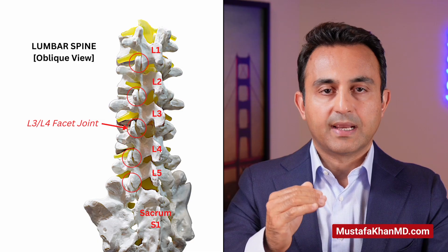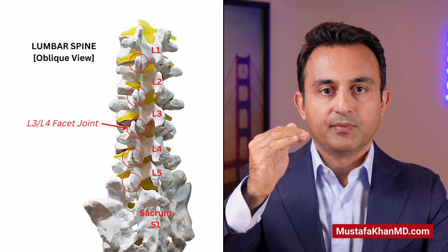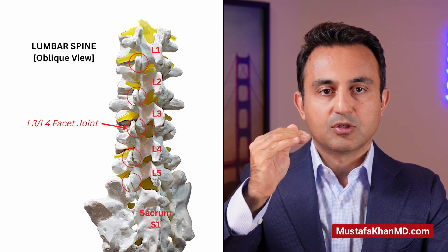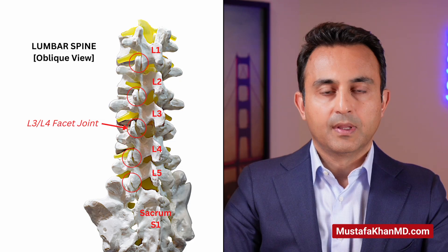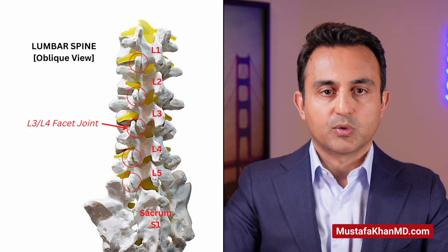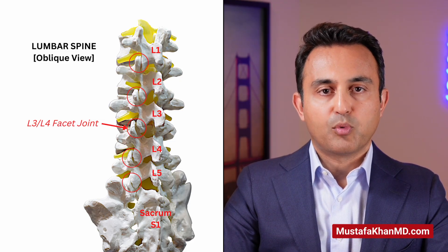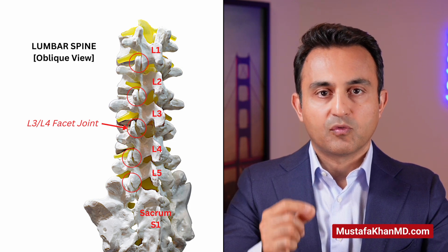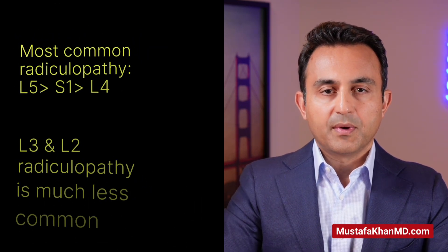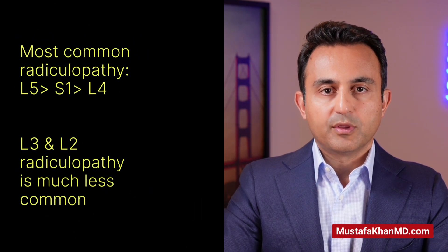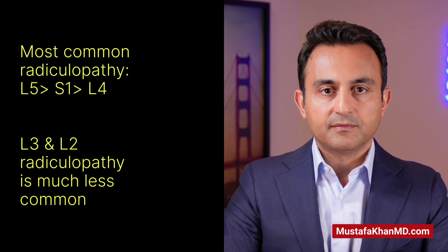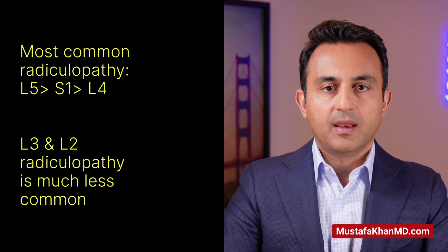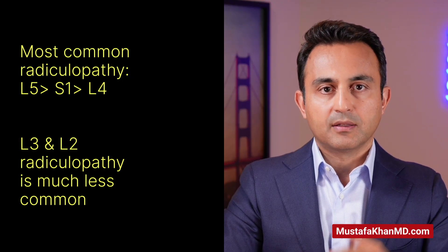The sacral nerve root is actually very important, and we'll talk about it later. Every vertebra has a joint connecting it to the vertebra above and also another joint connecting it to the vertebra below. These joints are called facet joints, and they can play an important role in the development of radiculopathy if they degenerate or form bone spurs. From a clinical standpoint, the most commonly affected nerve roots are the L5, S1, and L4 nerve roots, and to a lesser degree the L3 and L2 nerve roots.